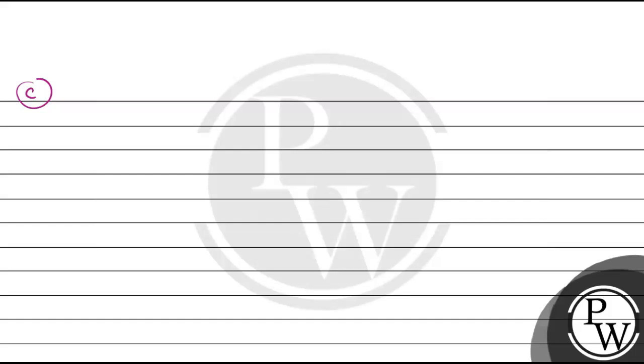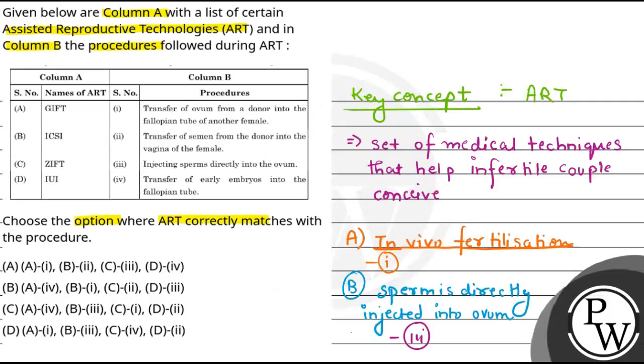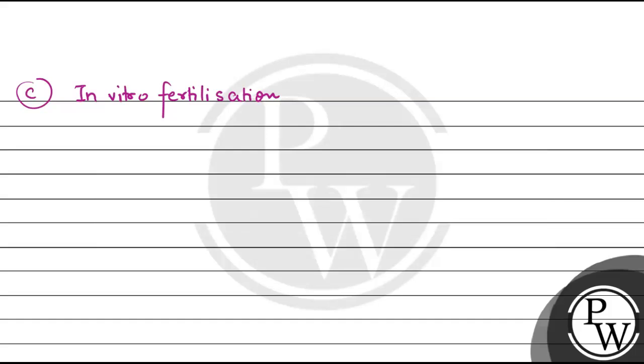Next, we talk about ZIFT, that is Zygote Intrafallopian Transfer. This is a method of in vitro fertilization. In this, fertilization occurs outside the body in conditions almost similar to those provided in the body. In ZIFT, zygote or early embryos are transferred into the fallopian tube.